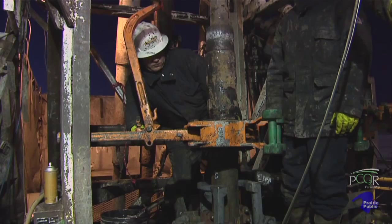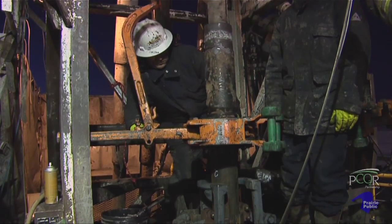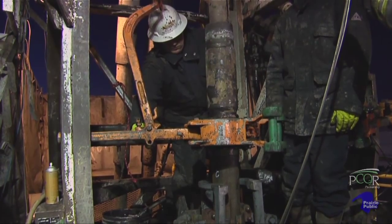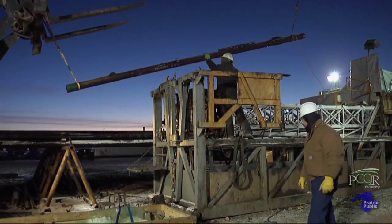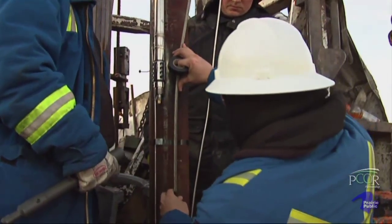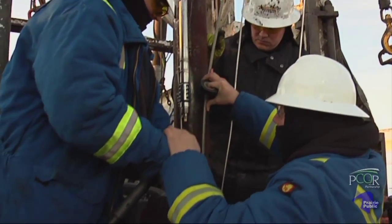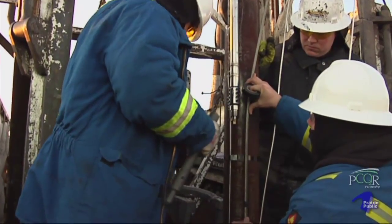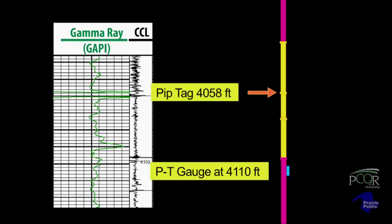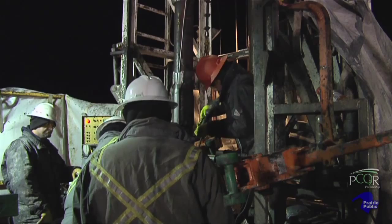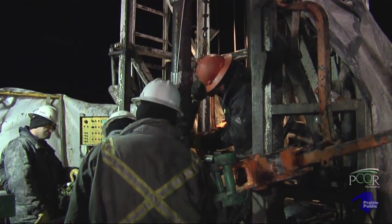Between PT gauge locations, the rig crew switches to conventional casing, fastening the lines mid-joint and at the collars. When the next desired gauge installation interval is reached, the crew installs another specialized PT gauge casing joint, attaches and splices the pressure temperature gauge into the multiconductor cable, and plumbs the perf charge firing head into the hydraulic line. At Bell Creek, a radioactive pip tag was placed two joints above the uppermost PT gauge to easily locate the relative position of the gauges with respect to the target formation on well logs during final placement. For the remainder of the hole, the three lines are fastened and clamped to the conventional casing joints.